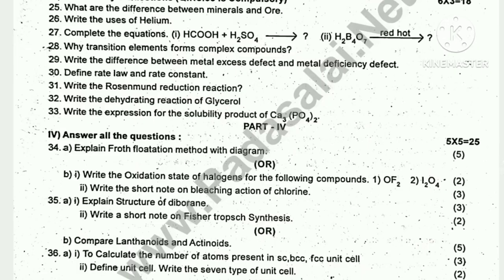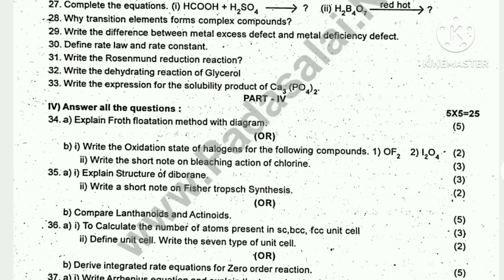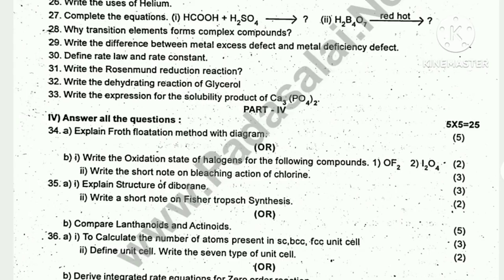Next, Part 3: 3 marks. 6 questions, 18 marks out of 9. What are the differences between minerals and ore? Write the uses of helium. Complete the equation. Why do transition elements form complex compounds? Define rate law and rate constant. Write the Reimer-Tiemann reaction.